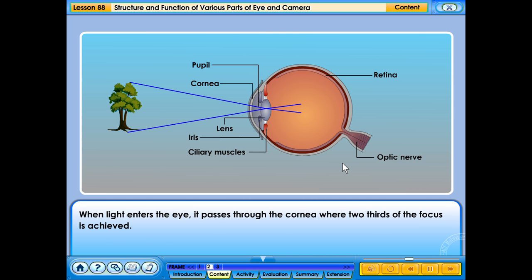When light enters the eye, it passes through the cornea where two-thirds of the focus is achieved. The light then passes through the pupil where the iris adjusts the amount of light that is allowed to enter. The remaining one-third of focus is then achieved when the light passes through the lens. The lens focuses the light on the retina where an inverted and diminished image is formed.